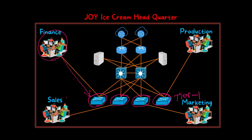Here you can see the finance team is connected to switch number one, the sales team is connected to switch number two, the marketing team is connected to switch number three, and the production team is connected to switch number four. Each switch represents a network and each department is connected to that network, so we can say this is the access layer.